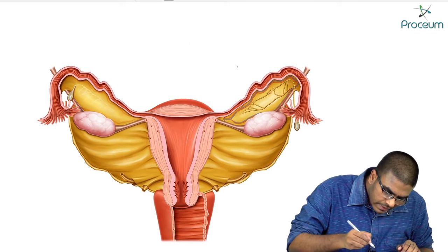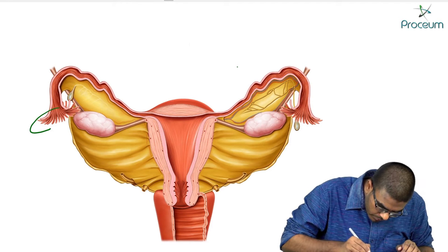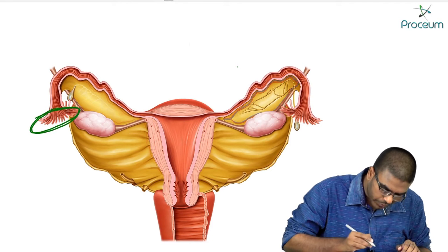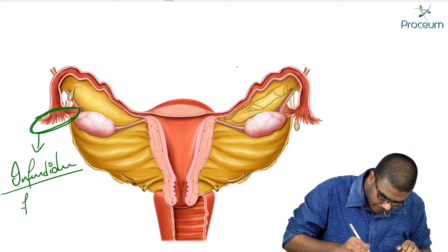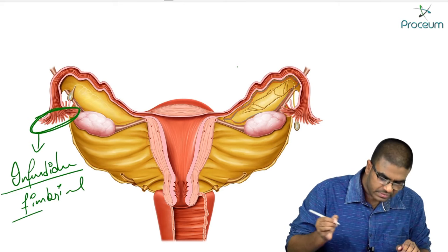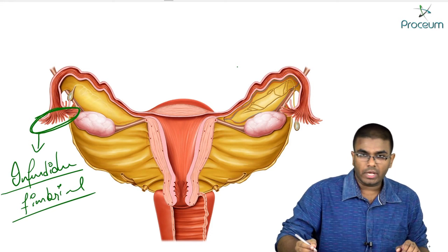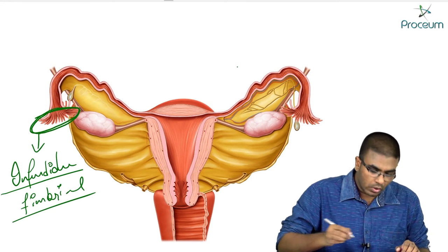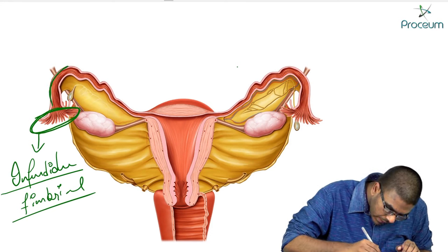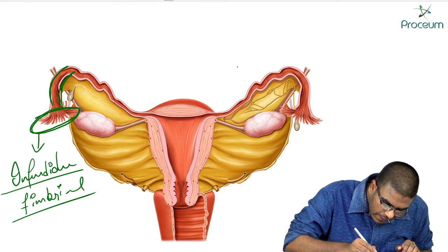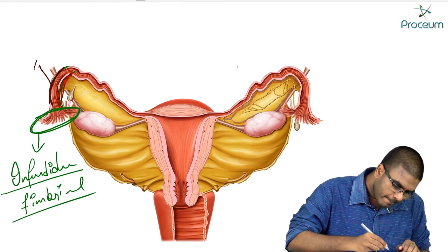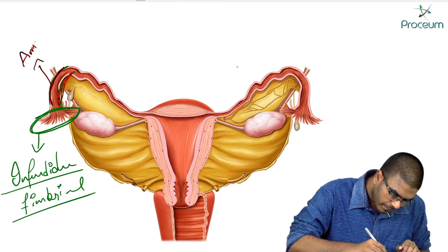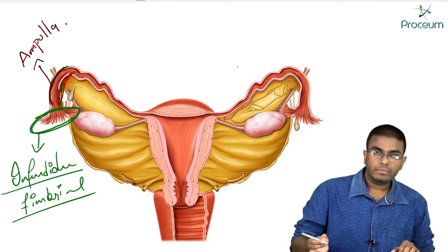This part of the fallopian tube is known as the infundibular part, or the fimbrial end. After that, we have one more area — this next part is known as the ampulla.